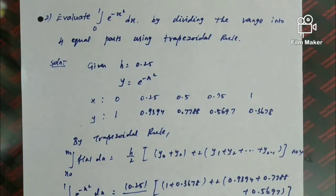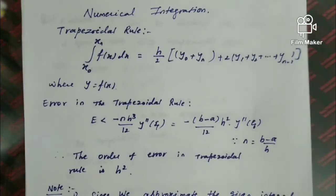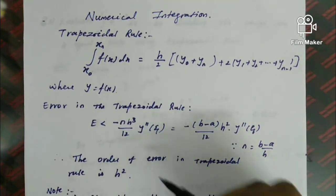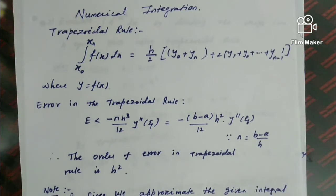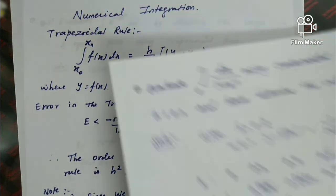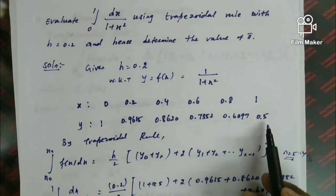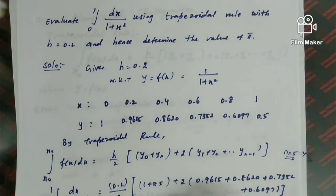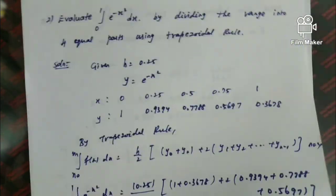This completes the two problems under the Trapezoidal Rule. The difference between problem 1 and problem 2 is that in problem 2, h was found directly by dividing the range into 4 equal parts. The error and order of error are two important theory questions. This concludes the first rule of Numerical Integration — the Trapezoidal Rule. Thank you for watching.